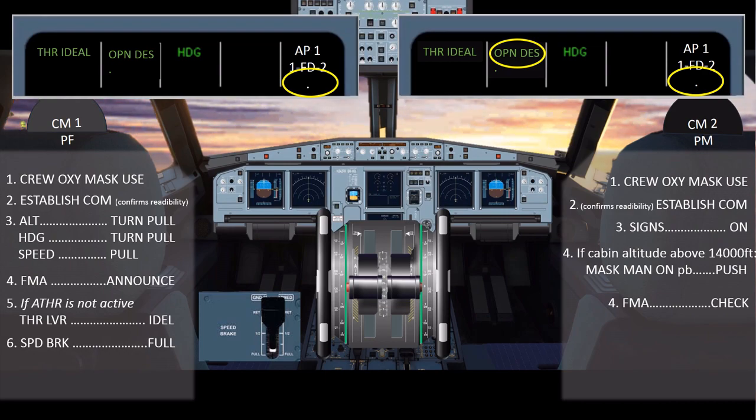To descend from flight level 390 to flight level 100, it takes approximately 4 minutes and 40 nautical miles.